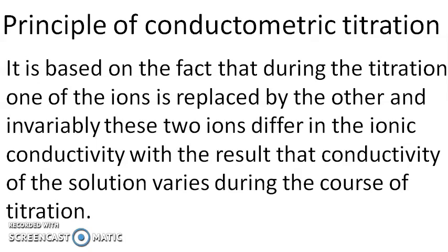The principle of conductometric titration is that when we carry out the titration, one ion is replaced by another. Since these two ions have different mobilities, they show different conductivity, and the variation of conductance can be measured to monitor the course of the titration. So as the titration proceeds, the replacement of ions can be monitored by the variation in the conductance of the electrolytic solution.